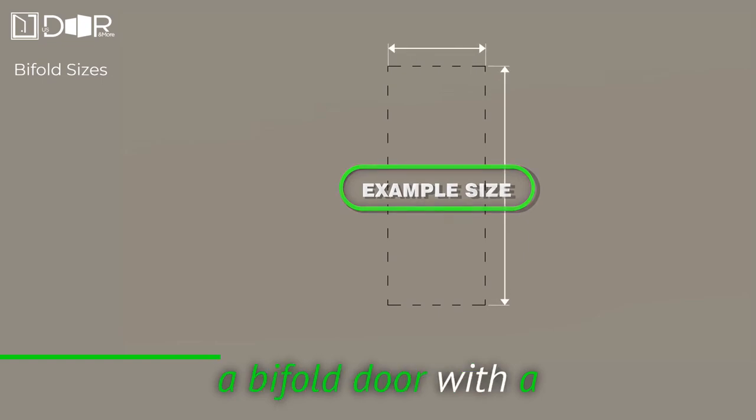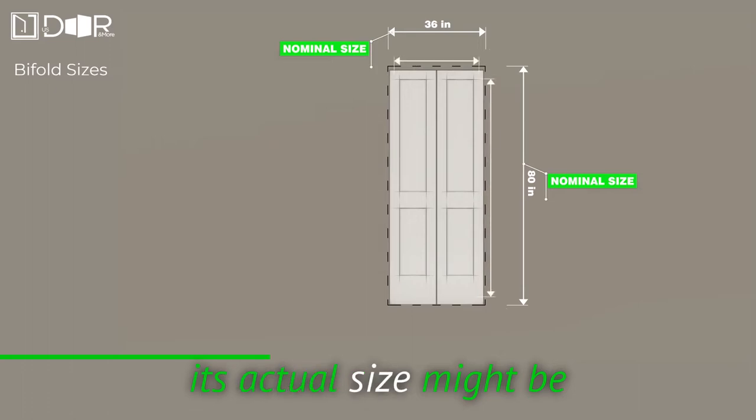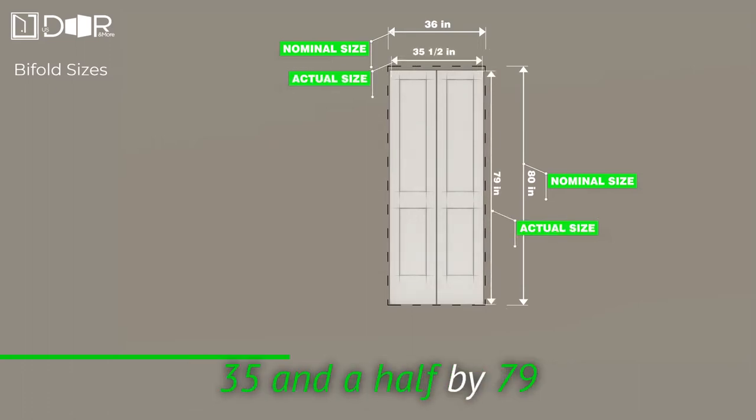For instance, a bifold door with a nominal size of 36 inches by 80 inches might have an actual size of 35 1/2 by 79 inches.